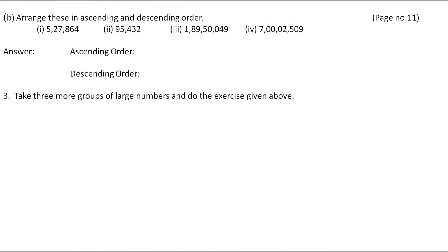The next question is: arrange these numbers in ascending and descending order. They have given these numbers and we have to write them in ascending and descending order. Ascending order means starting from the smallest number and ending at the greatest. Descending order means starting from the greatest and ending at the smallest. First we will write ascending order. This number has 6 digits, this one has 5 digits, this one has 8 digits, and this one also has 8 digits. As this number has 5 digits, the smallest number is 95,432.